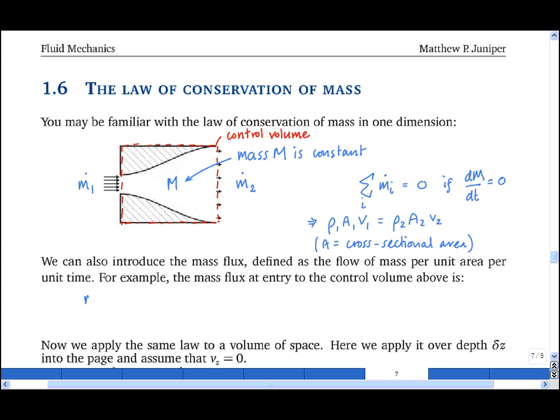I want to introduce the mass flux, defined at entrance as m1 dot divided by a. It's the mass flow rate per unit area. By using the definition above, it is rho1, a1, v1 divided by a1, which equals rho1, v1. Note the units, they are kilograms per meter squared second.